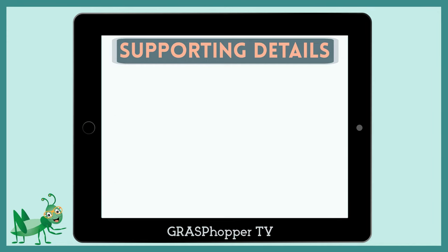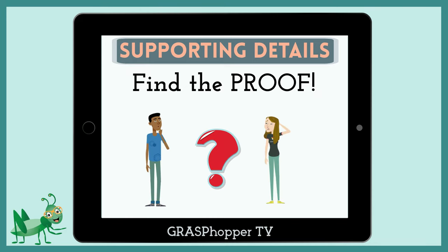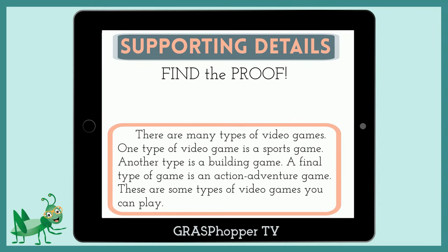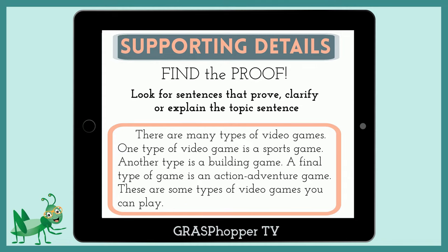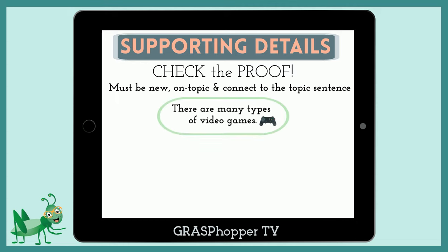It's time to find the proof. To find the proof, also called the supporting details, we look for sentences that prove, clarify, or explain the topic sentence. Sometimes we will see transition words at the start of these sentences. We have our topic sentence, and here are some sentences that might be the supporting details. We will check each detail to make sure it gives new, on-topic information that connects to the topic sentence.